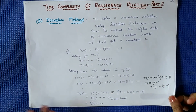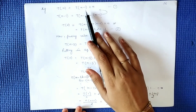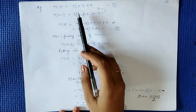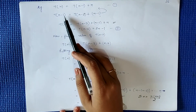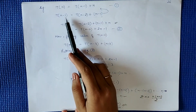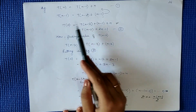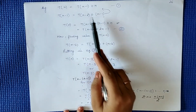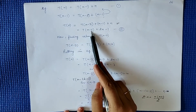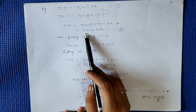Let's solve some examples. First example: T(n) = T(n-1) + n. Here the function f(n) = n. First, we find the value of T(n-1) by substituting N-1, giving us T(n-2) + (n-1). Now putting this value of T(n-1) into the main equation, we get T(n) = T(n-2) + (n-1) + n, which simplifies to T(n-2) + 2n - 1.